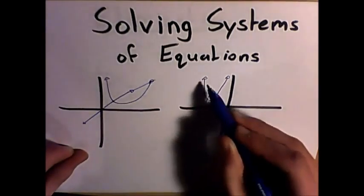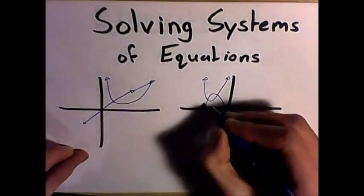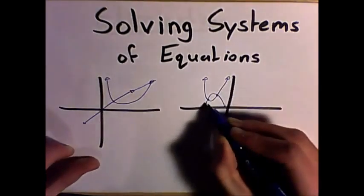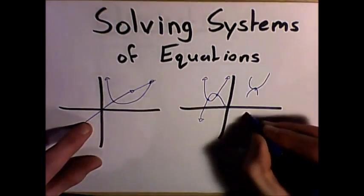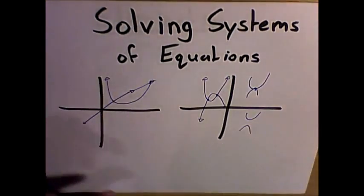And we're also going to be looking at a quadratic and quadratic relationship. Now, this type of relationship can either have two intercepts, one intercept, or no intercepts.